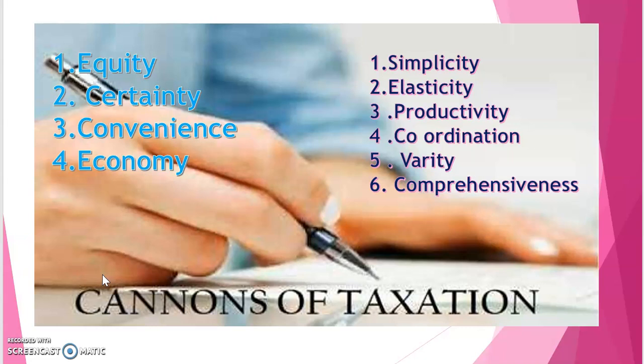Now we discuss some modern canons or principles. Canon of productivity states that the tax must be productive or cost effective. This implies that revenue earned from any tax must be a sizable one. The tax is said to be productive only when it adds incentive to production. Regarding canon of elasticity, taxes should be levied in such a way that the rate of taxes can be changed according to changes in the situation. Whenever the government needs money, it must be able to extract as much income as possible without generating any harmful consequence through rising tax rates. Income tax satisfies this canon of elasticity.